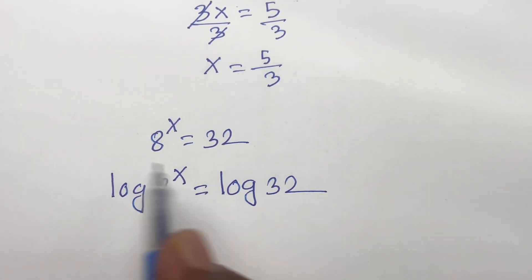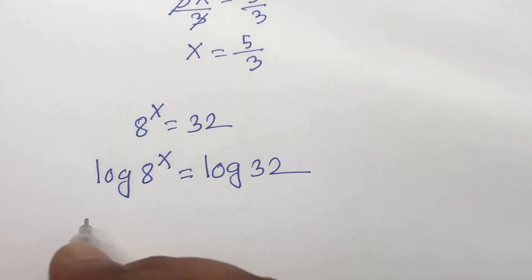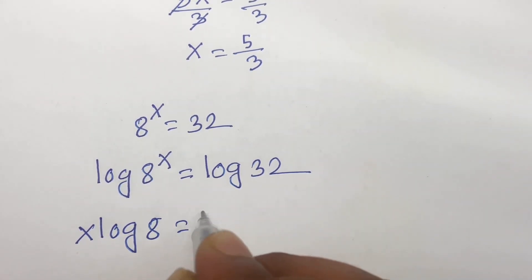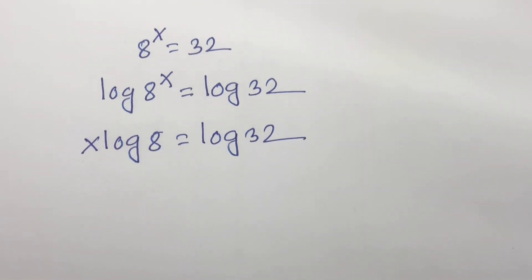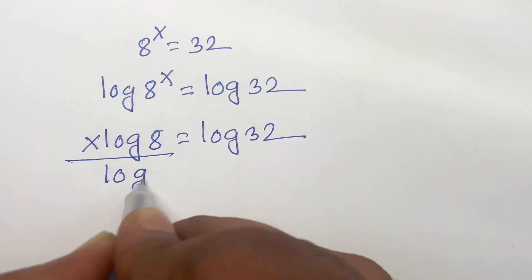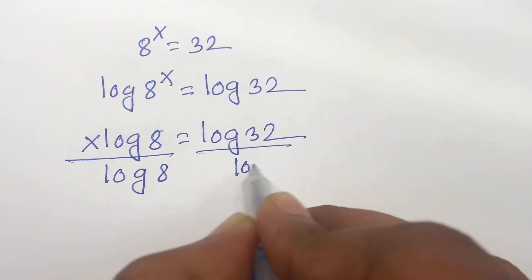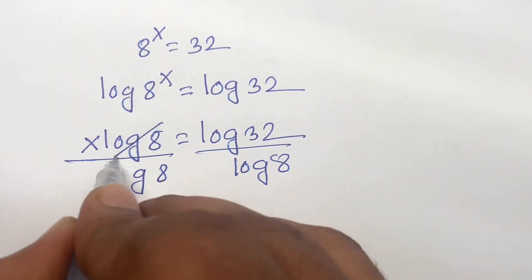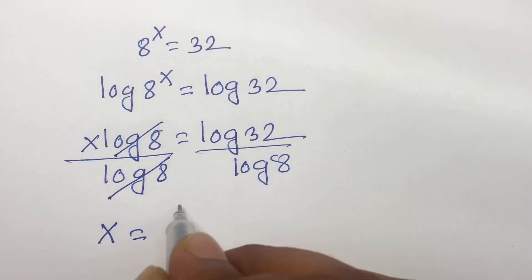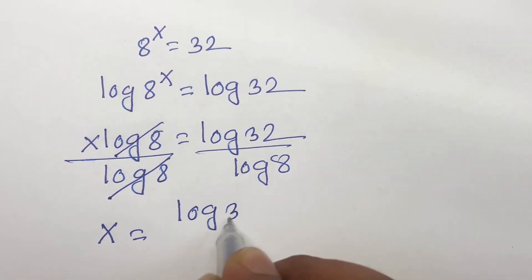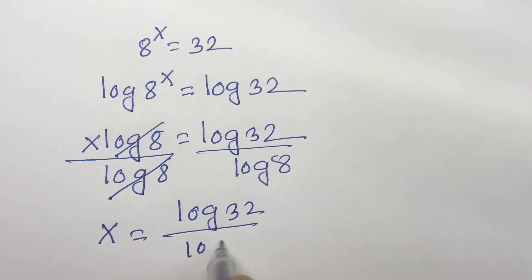Now this x moves in front, so I can say here is x log 8 is equal to log 32. Now I divide both sides by log 8. Log 8 and log 8 cancel, then x is equal to log 32 over log 8.